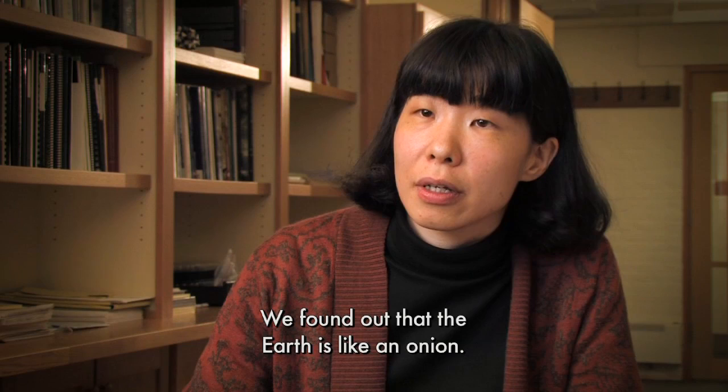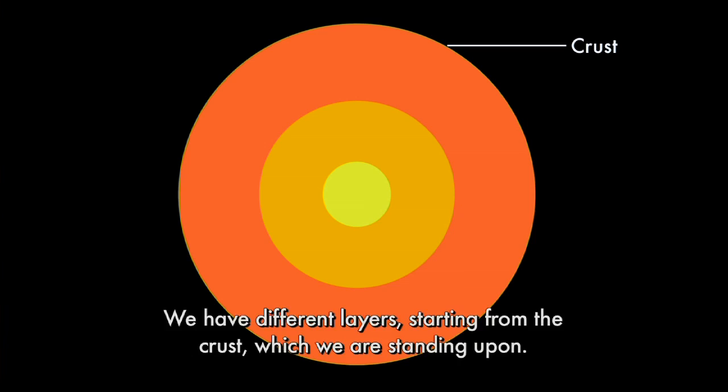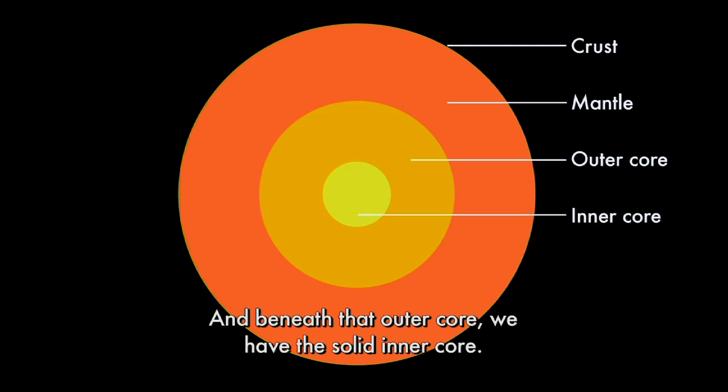We found out that the Earth is like an onion. We have different layers starting from the crust, which we are standing upon. Beneath that, we have the mantle. And beneath that, we have liquid outer core. And beneath that outer core, we have the solid inner core.